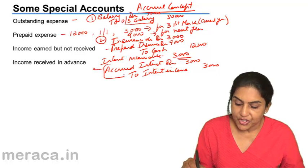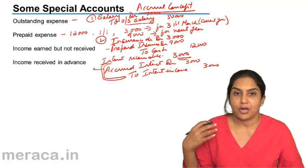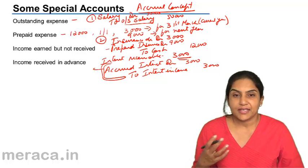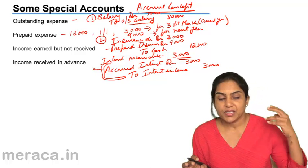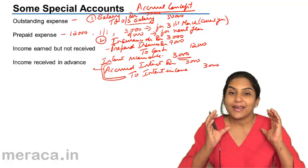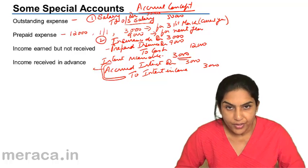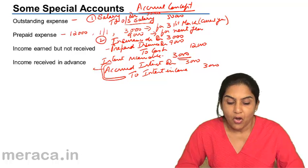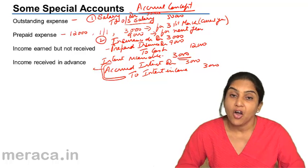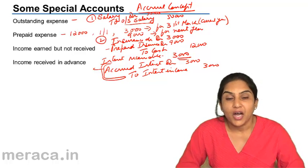The accounting entries have been shown to illustrate how accounts like outstanding salary, prepaid expense, or accrued income arise. Outstanding expense, prepaid expense, income earned but not received, and also income received in advance are all representative personal accounts representing the accounts of people to whom money is owed — like in outstanding expense or income received in advance — or from whom money or services are receivable, like in prepaid expense or accrued income.